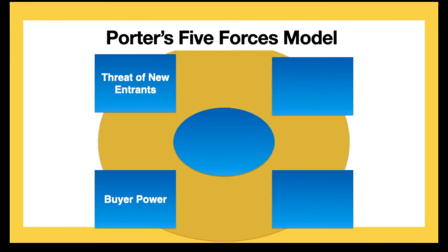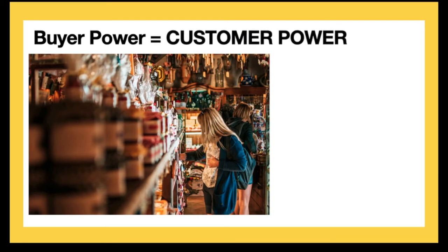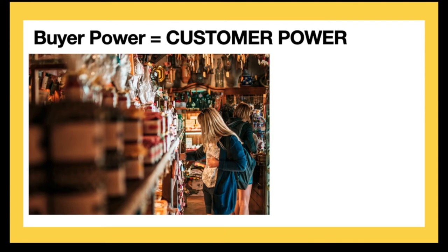The next force is buyer power. When I talk about buyer power, think about it as customer power — what is the power of the customer in the buying relationship? There are lots of things that influence buyer power: can they take their business elsewhere? Can they go without your product or substitute something else? Sellers in this relationship want to decrease the amount of power that the customer has, so they might try to increase the exclusivity of their product. Patents are a good way to do that — if you patent something, you can be the only one that can offer it, which decreases buyer power and allows you to have greater margins and market share. You might also try to increase the switching costs — making it more painful for buyers to switch to a competitor.